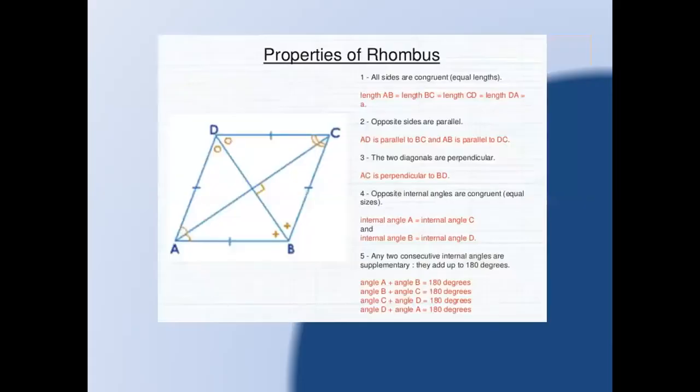Now look at the properties of a rhombus. First, all the sides are congruent — all sides are of equal length. You may see: length AB equals length BC equals length CD equals length DA. Second, opposite sides are parallel: AD is parallel to BC and AB is parallel to DC. Third, the two diagonals are perpendicular to each other: AC is perpendicular to BD.